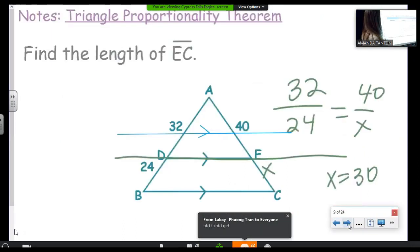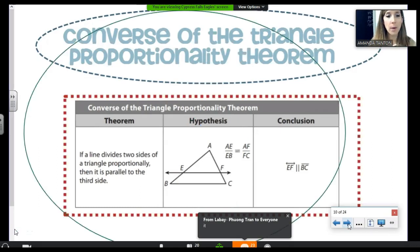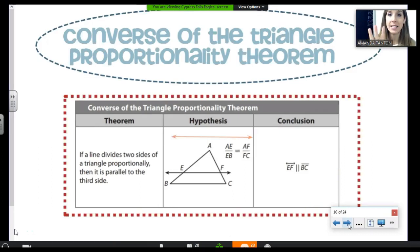Now, what's cool about this theorem, I mean, honestly, it's true about most theorems, but anyways, what's cool about this theorem is that the converse works as well. Do not write this down, but what the converse says is that if the sides, the pieces, not the sides, if the pieces are proportional, then those segments are parallel. So, if proportional, then parallel. It's the converse of the TPT.